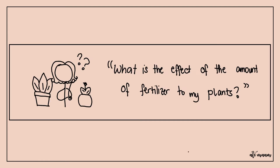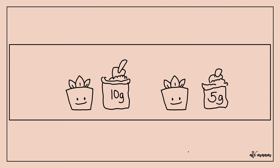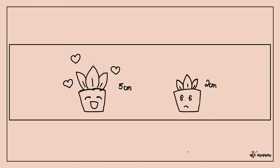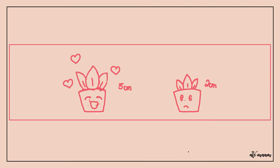For example, a plantita wants to know the effect of different amounts of fertilizer on her snake plants. With two plants of the same height and conditions, she puts 10 grams on the left side and 5 grams on the right side. After a week, she saw the difference: the 10-gram fertilizer made her plant grow 5 centimeters, while the 5-gram fertilizer made her plant grow 2 centimeters only. In this simple study, the data she collected are numerical values, so we can say that she conducted quantitative research.